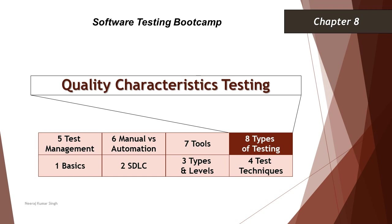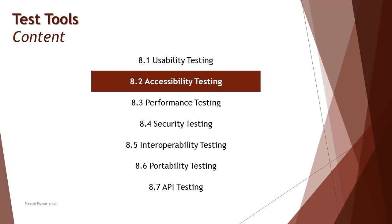Hello friends and greetings for the day. Welcome back to another tutorial on our software testing boot camp, where we are talking about the fundamental concepts of software testing. As part of today's tutorial, we are continuing with quality characteristics in testing, which is chapter eight, moving to section 8.2 on accessibility testing — understanding what accessibility is all about and how it contributes to the overall quality attribute of our software.